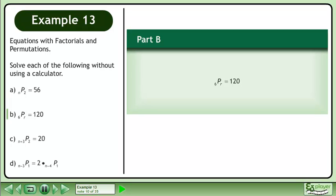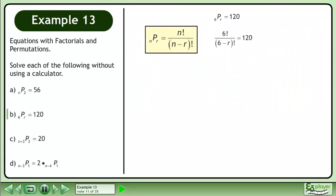In Part B, solve 6Pr equals 120. Write the permutation as a fraction.